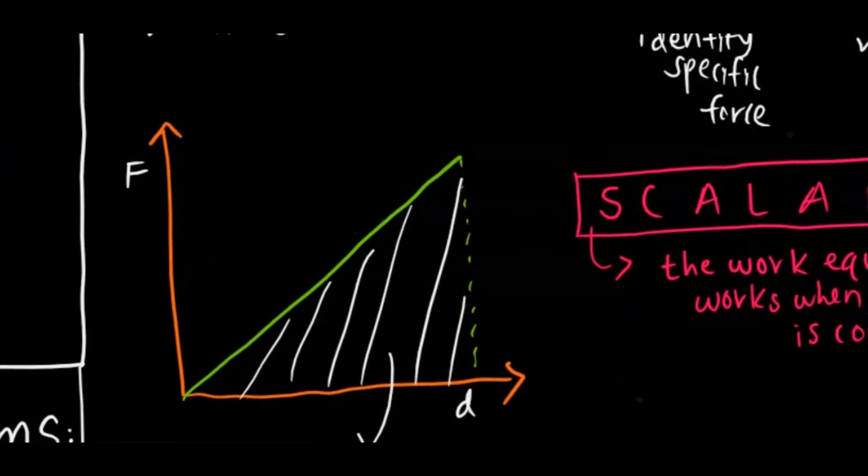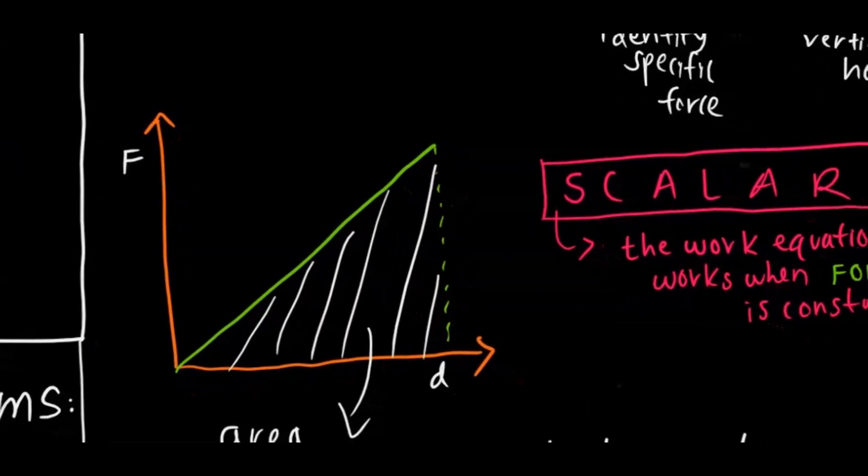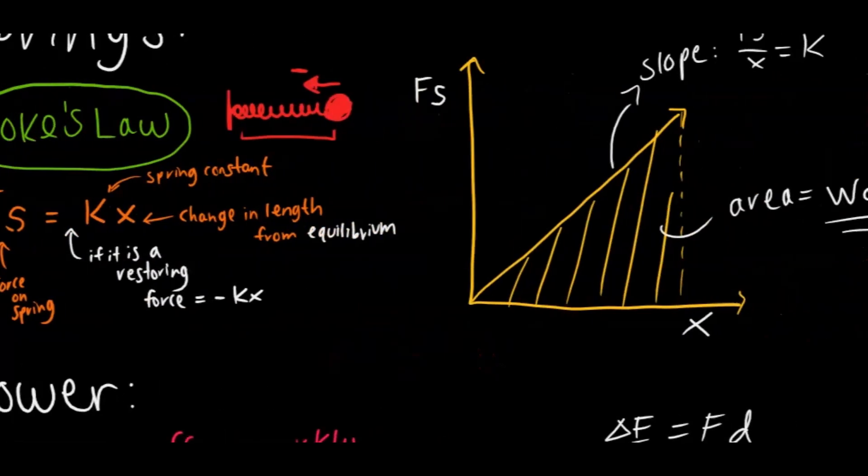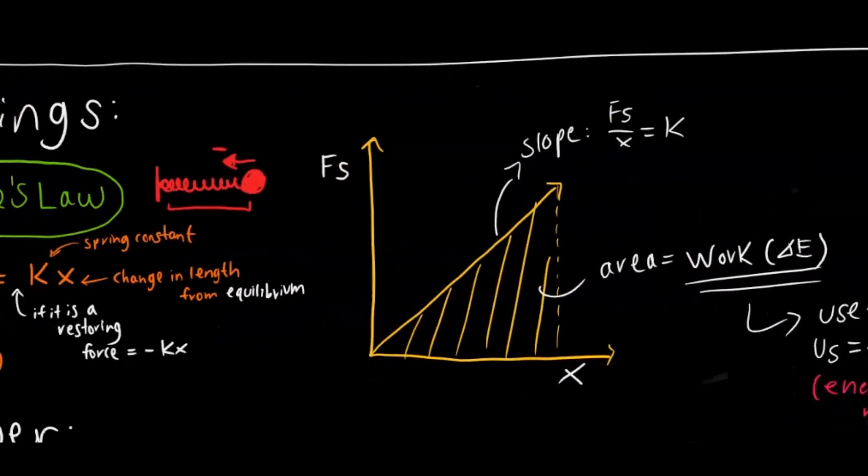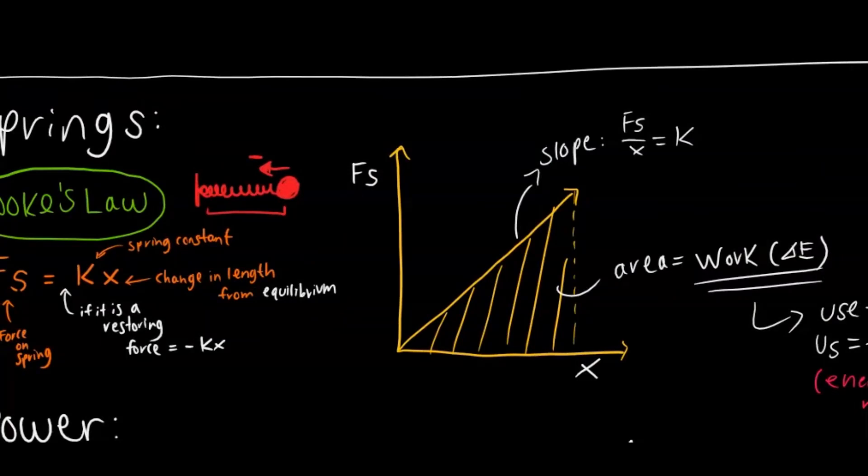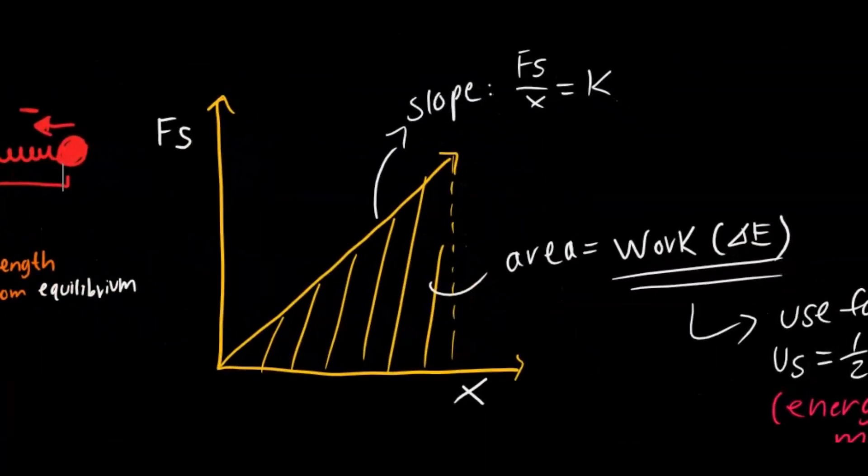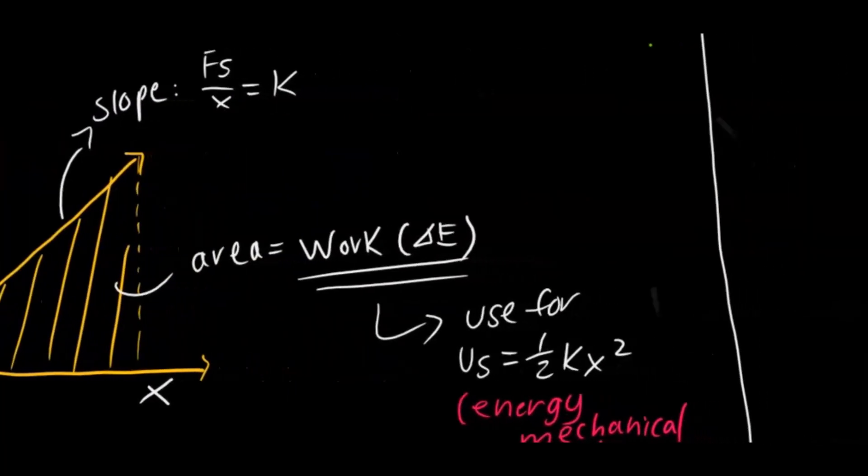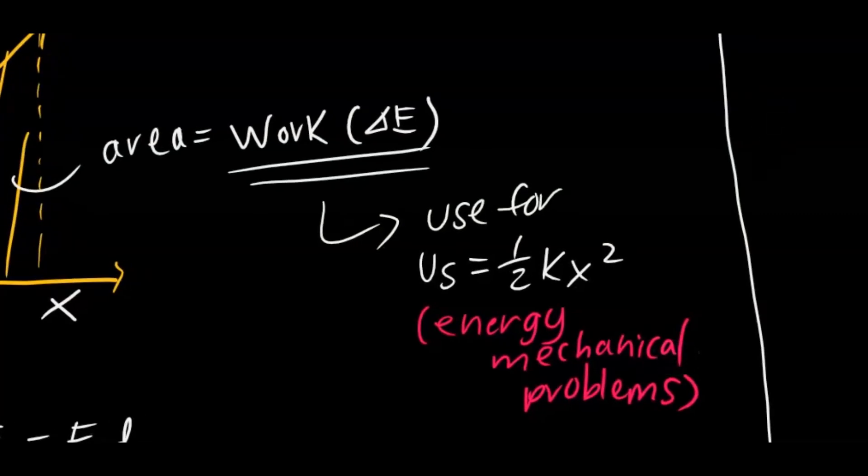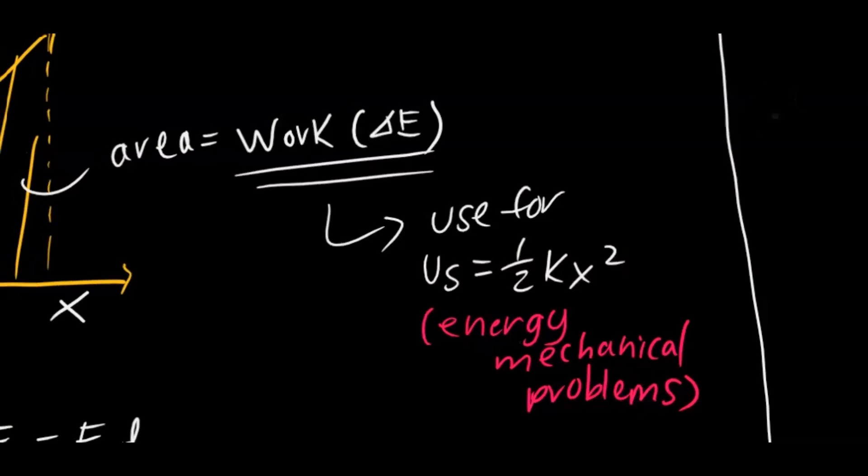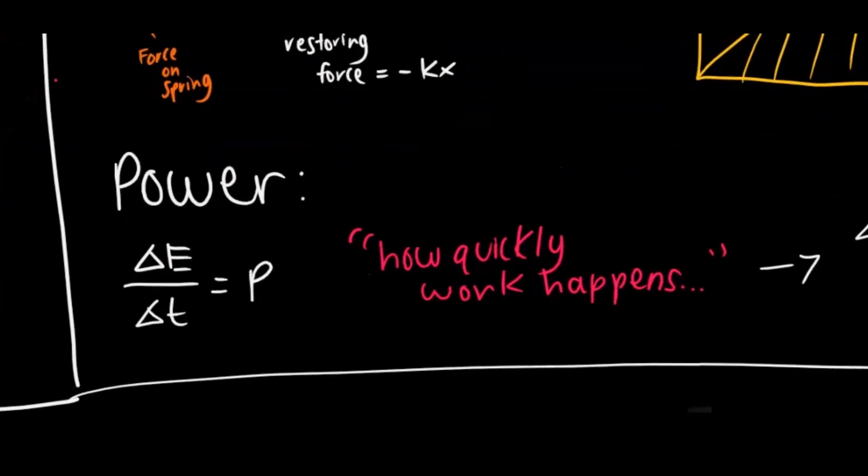So if we observe that chart or the graph of force over change in length from the equilibrium position, that is going to be equivalent to K, the spring constant, which is the slope. But like we talked about before, the area of force over displacement is work. And in this case, we have force over displacement, displacement from the equilibrium position. And so we know that the area of this graph is also the change in energy. And so when you find this change in energy, a lot of times what you'll do is then plug that in for spring potential energy. So when you work with Hooke's Law, think springs, think spring potential energy. So that's something just to keep in mind.